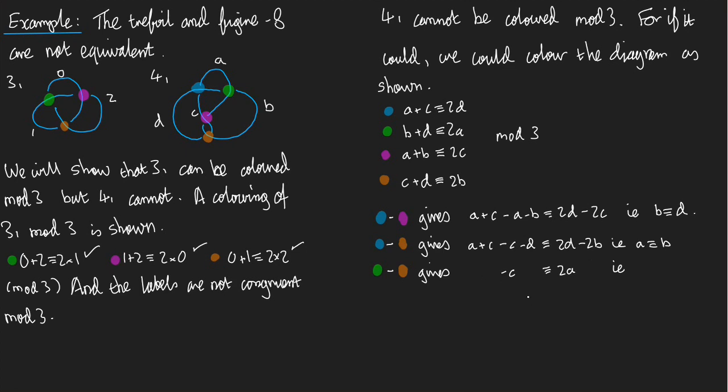Let's take minus both sides. C is congruent to minus 2A. Well minus 2 is 1, so we get C is congruent to A. So what have I got? I've got A is congruent to B is congruent to C and B is congruent to D. So all my labels are congruent. So the coloring is constant. In other words it's not a coloring. So this is not a coloring and that's a contradiction.